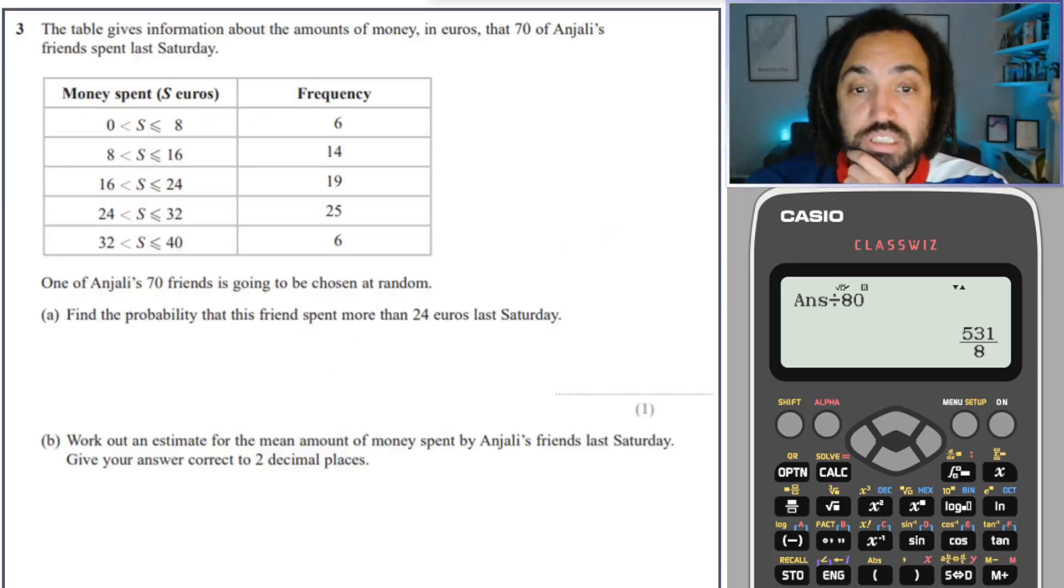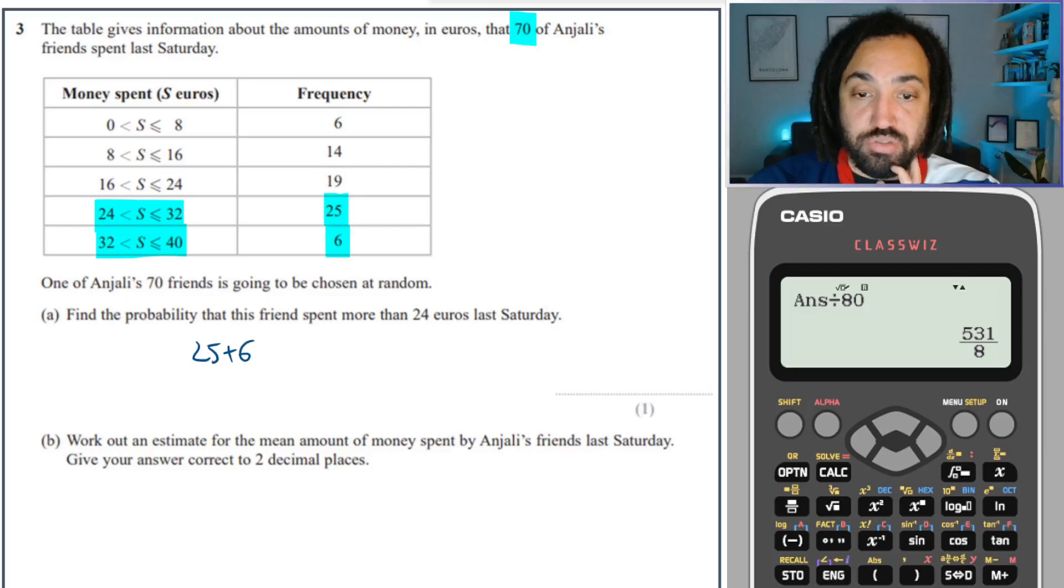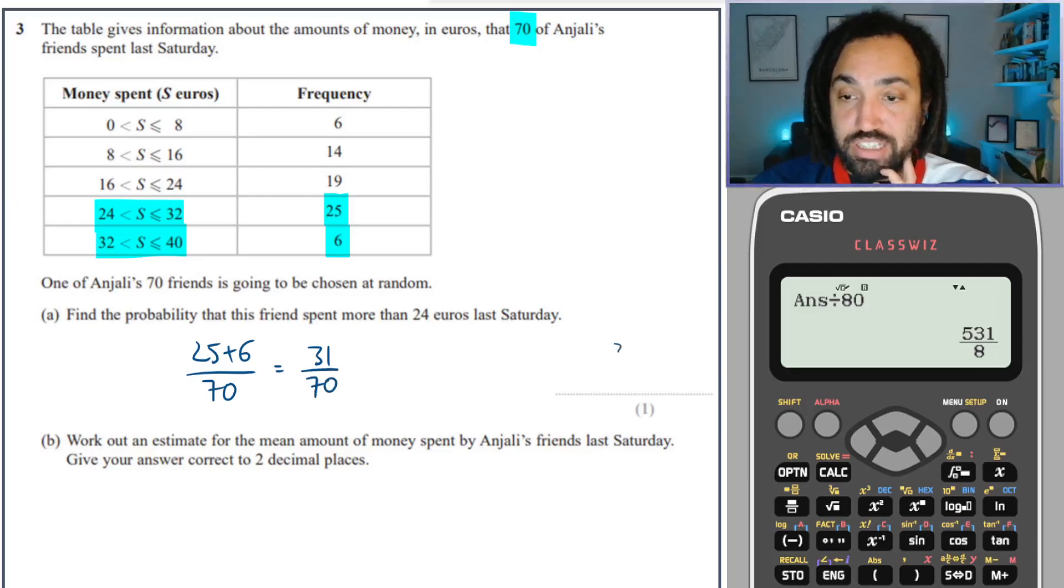Next question, and again we get given the frequency. One of the 70 friends is going to be chosen at random. Find the probability that this friend spent more than 24 euros. So more than 24 is either this row or this row, so they have a total of 25 plus 6 friends out of the 70. That is 31 out of 70.